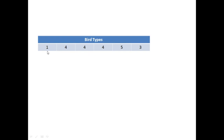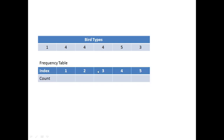The next input has six birds with IDs 1, 4, 4, 4, 5, and 3. To solve this, we are going to use a frequency array — not a special kind of array, just an array that holds the frequency of every element. Since there are only five types of birds, the frequency array will have indices 1 to 5. I will start scanning with the first bird. Its ID is 1, so I go to the frequency table and update the count at index 1 from 0 to 1.